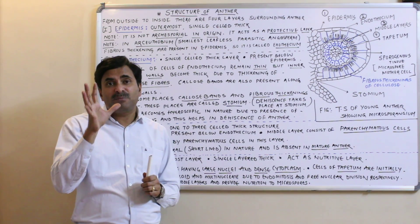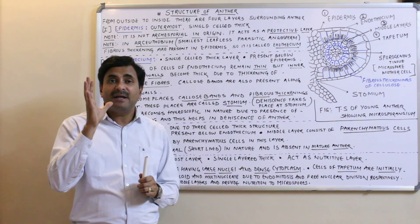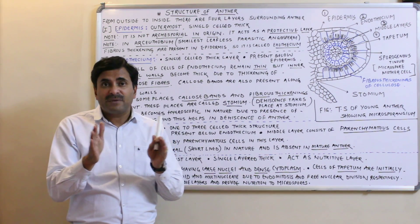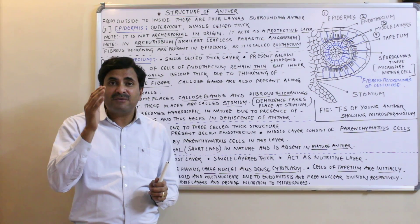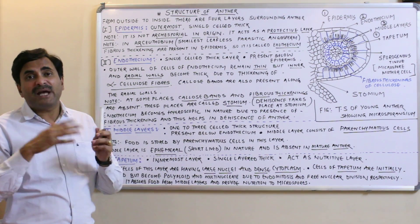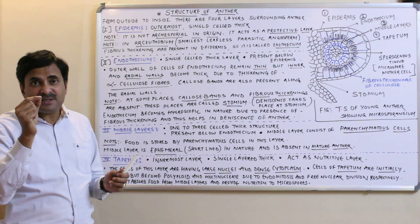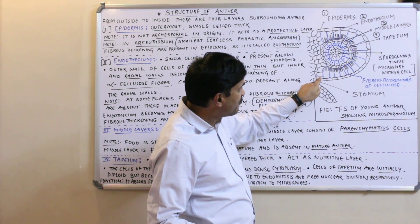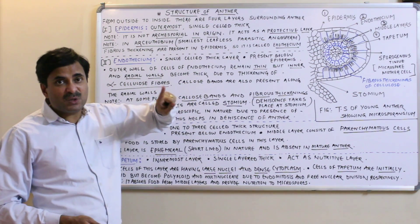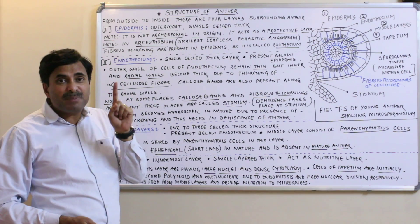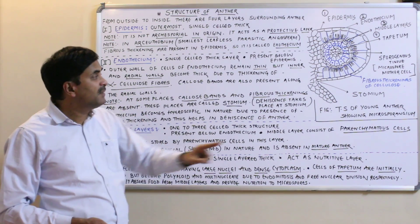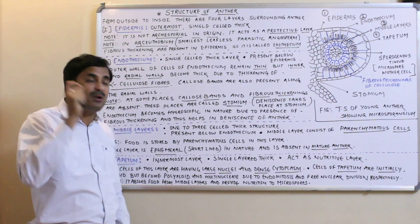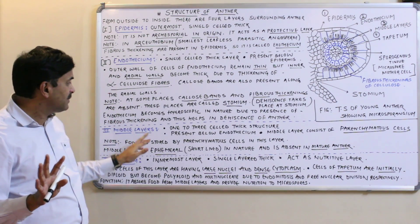Inside the anther, pollen sacs are present and filled with pollen grains. As soon as the anther matures, it bursts and the pollen grains come out. The anther dehisces at a particular place known as the stomium — the place on the endothecium where the fibrous thickenings and callose bands are totally absent.